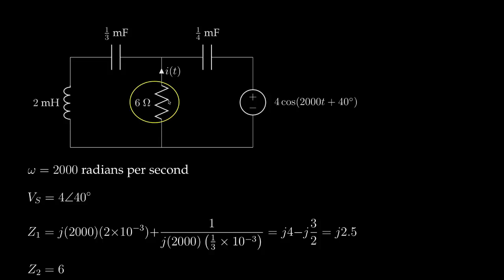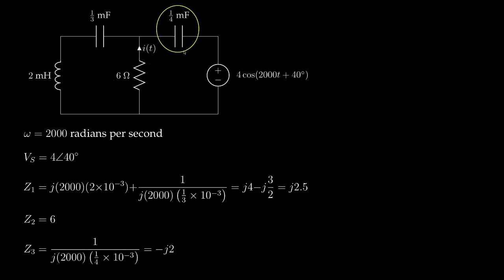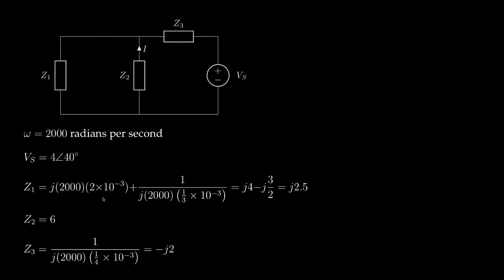Next, the impedance for the resistor is simply its resistance independent of the frequency of the sinusoidal driving functions. Finally, the impedance for the other capacitor is 1 divided by J times the radian frequency times its capacitance. And if we work this math out, we can reduce this to negative J times 2. Now, at this point, we can redraw this circuit in terms of the phasor voltage and these complex impedances. And now we can analyze this circuit with any method we would use for a resistive circuit with DC sources. The only difference here is going to be that the voltage and all of these impedances are, in general, complex valued.